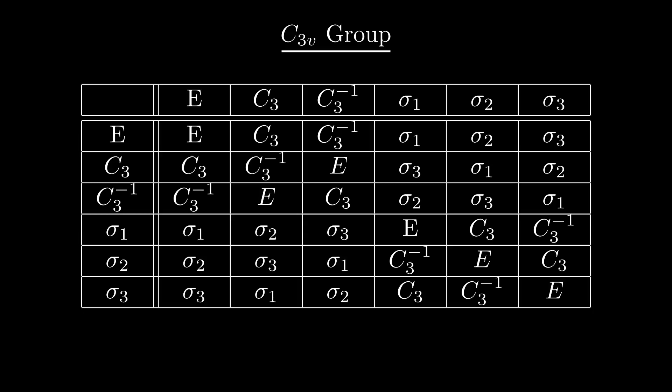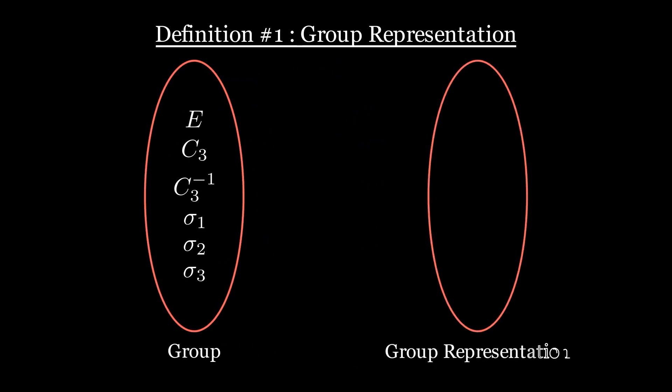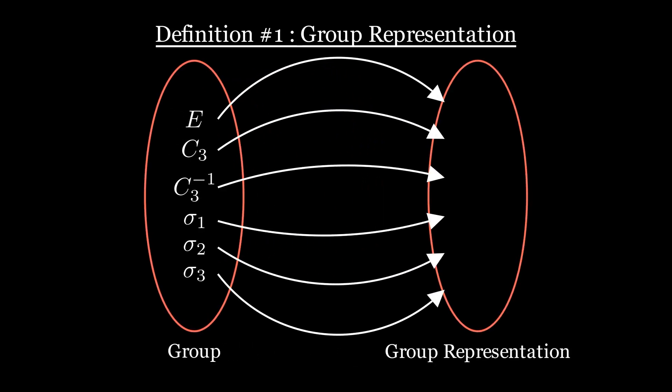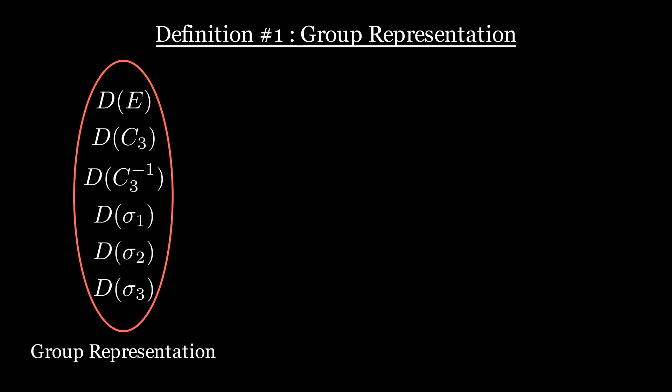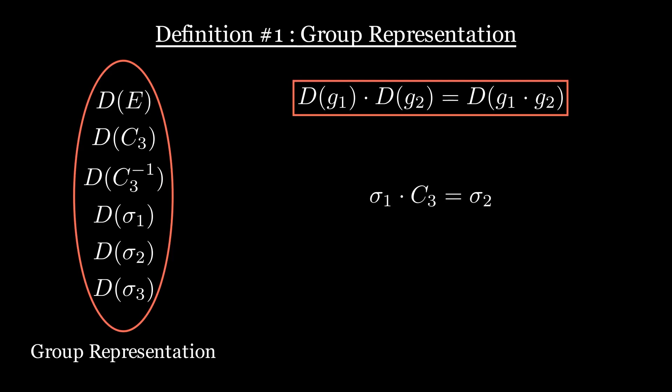Now that we are more familiar with the notion of groups, let's define group representations. For a given group such as our c3v group, a representation associates each group element g to some square matrix D of g, giving a set of matrices which must obey the following rule. This rule ensures that the matrices multiply in the same way as the group elements.